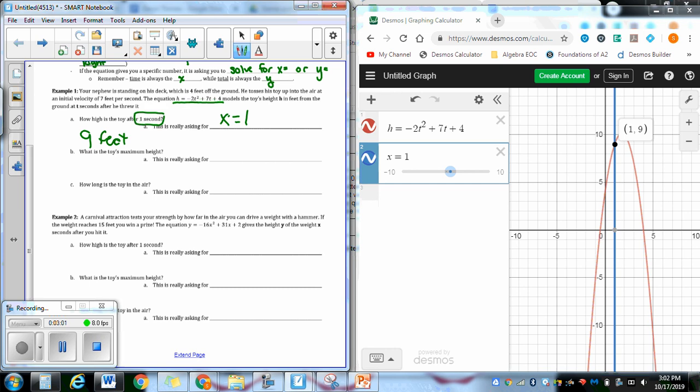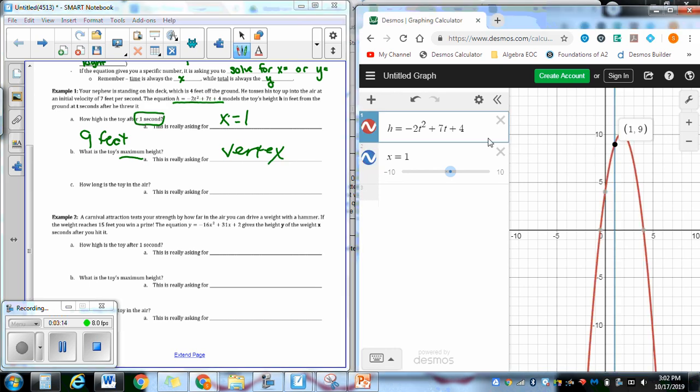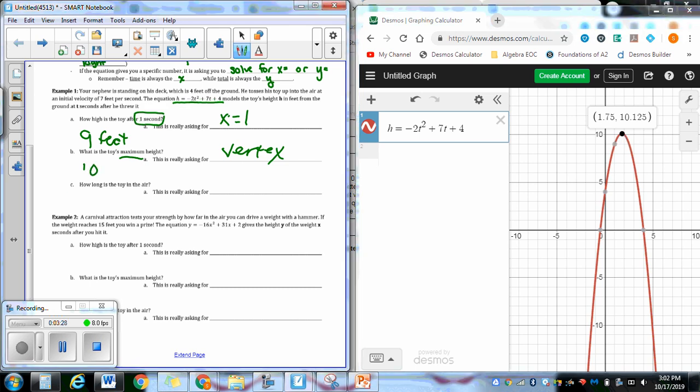Part B says, what is the toy's maximum height? And that word maximum right there is my clue. The word maximum is telling me to look for the vertex. So the vertex of this is here. It says, what is the height? So remember, x is the time, y is the total. And since I'm looking for a total height, the answer is going to be 10.125 feet.